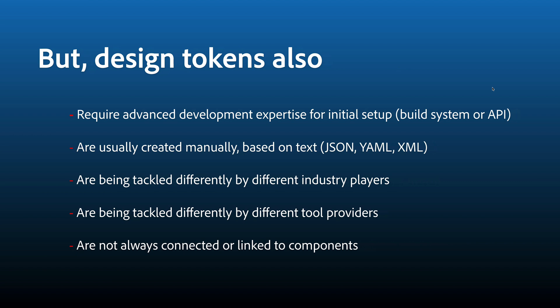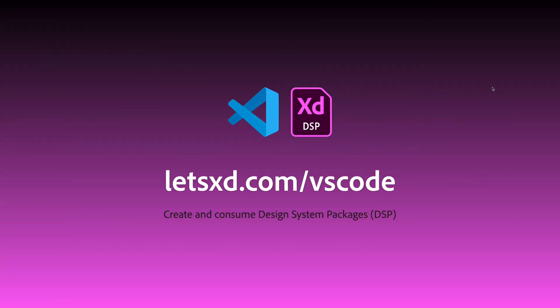But they're not perfect. Working with tokens requires domain expertise — you have to know how to use the build system and how to consume different APIs, each of which probably uses a different format. A lot of people who work with tokens have to write tokens manually, using JSON, YAML, or XML. Some people use Google Sheets or a spreadsheet to create and map their tokens. They are being tackled differently by different players, different tools, different teams, and they're not always connected to components.